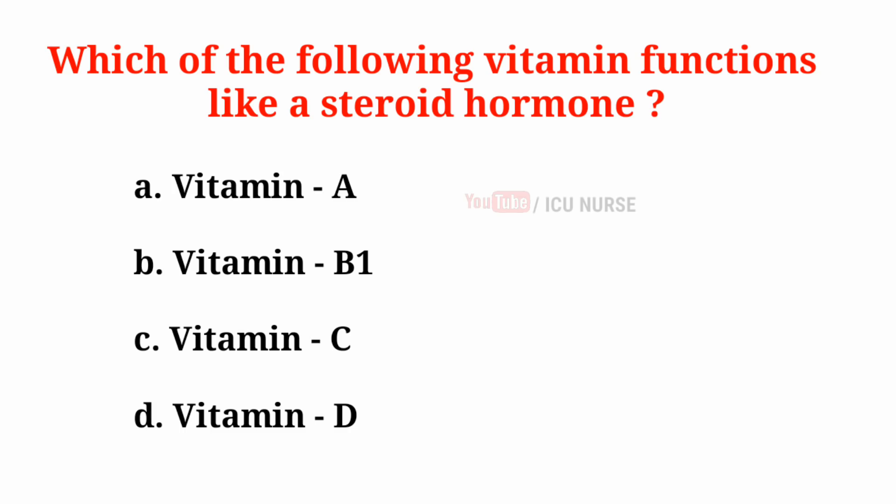Which of the following vitamins functions like a steroid hormone? A. Vitamin A, B. Vitamin B1, C. Vitamin C, D. Vitamin D. And the correct answer is D. Vitamin D.